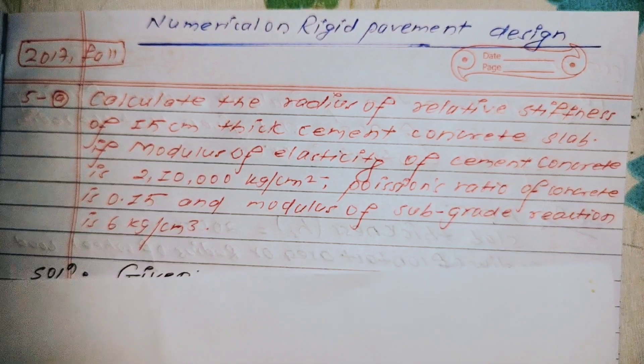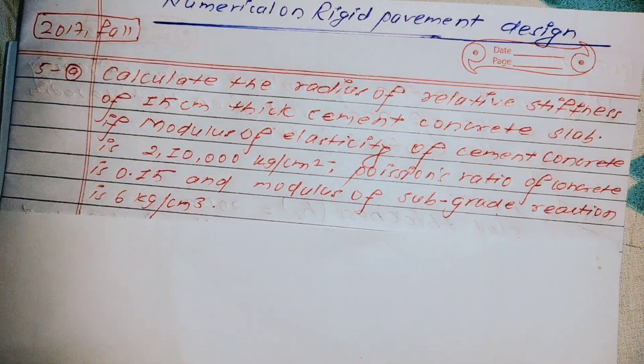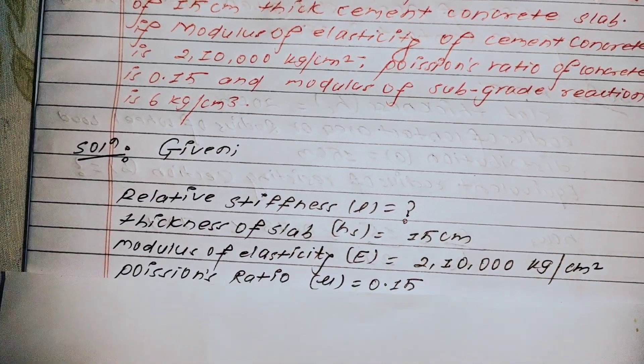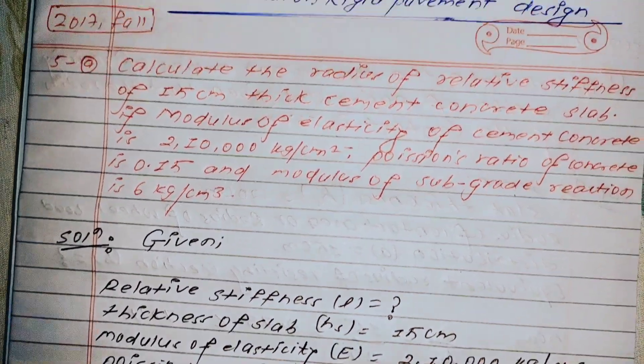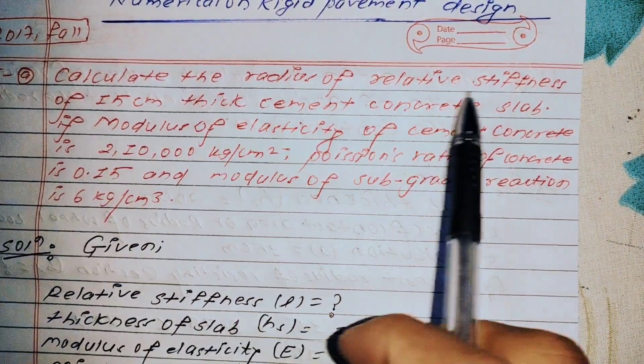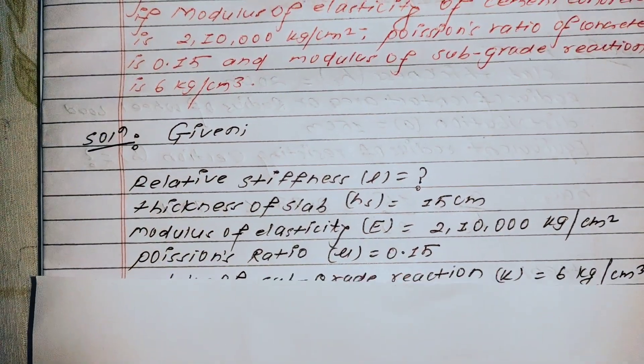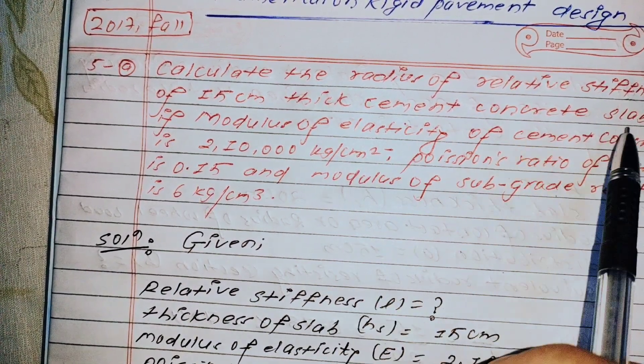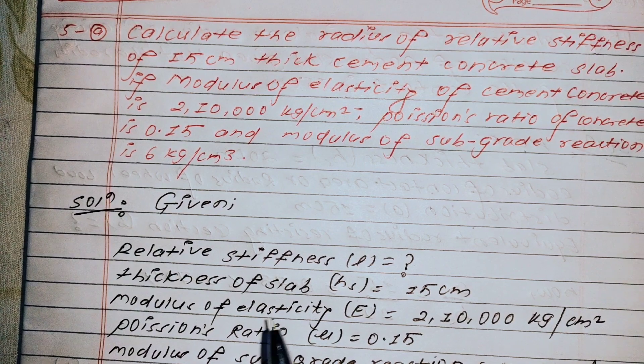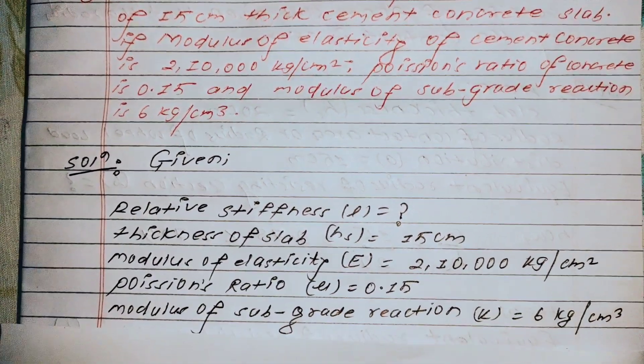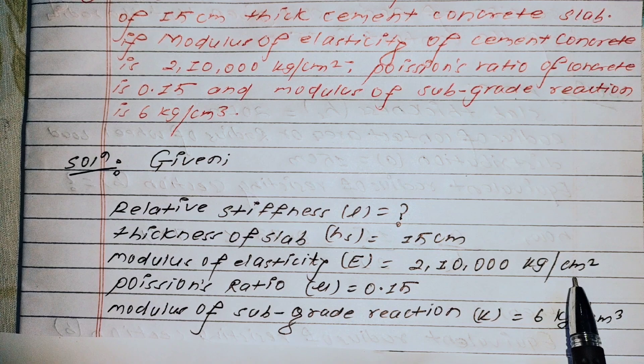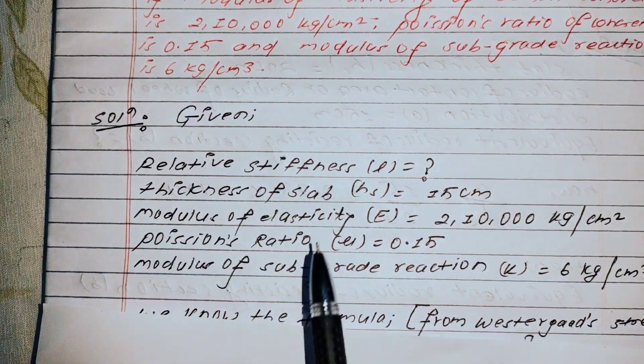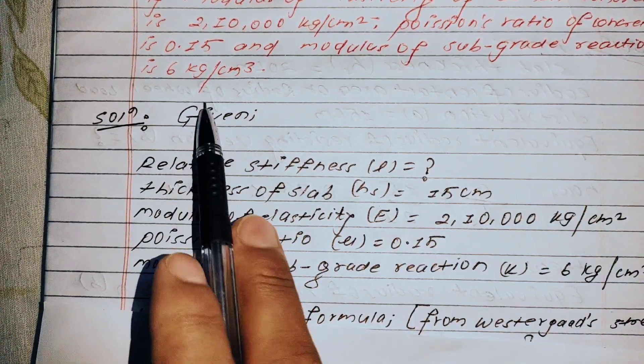For the solution, I always write the given data first. The relative stiffness radius needs to be calculated. Thickness of slab is 15 centimeter, modulus of elasticity is 210,000 kg/m², Poisson's ratio is 0.15, and modulus of subgrade reaction is 6 kg/cm³.